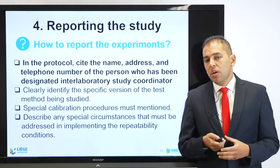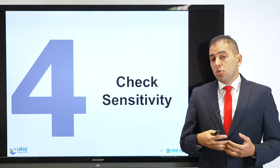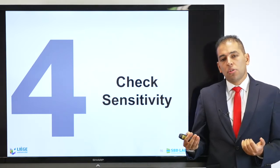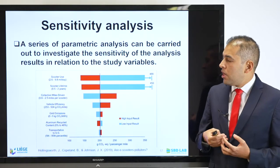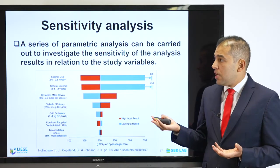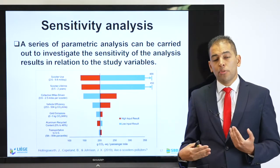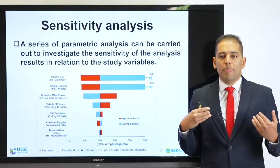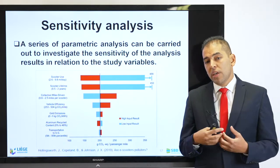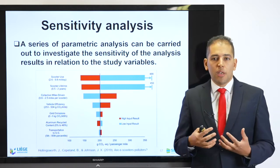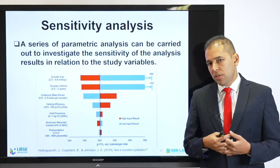Once this is done, you can go the extra mile: after completing the round-robin test, you can perform sensitivity analysis. A series of parametric analyses can be carried out to investigate the sensitivity of the analysis results in relation to the study variables. This is very important because it brings a lot of insights and better understanding of the performance of your subjects, increases the added value of your research outcomes, and better enlightens all participants in your laboratory testing.